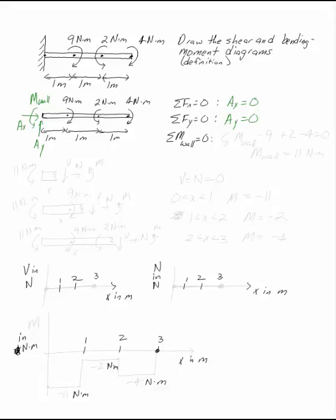And if you sum the moments at the wall, for example, I have m at the wall, where this is positive, minus nine, plus two, minus four, equals zero. m at the wall is eleven newton meters.